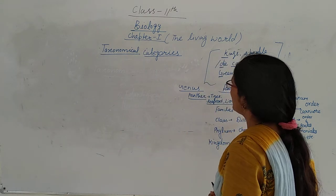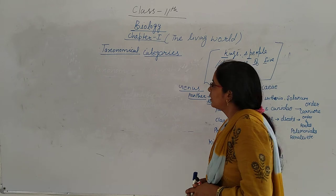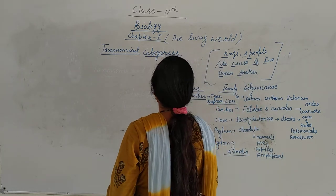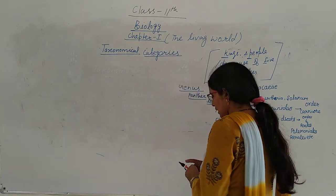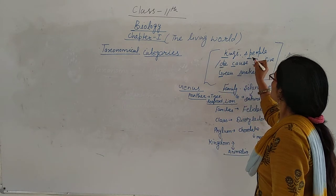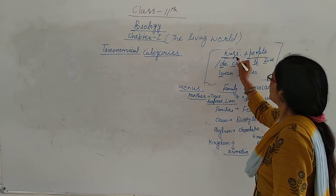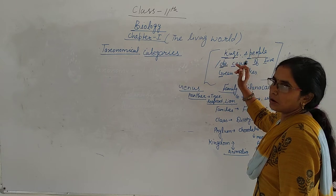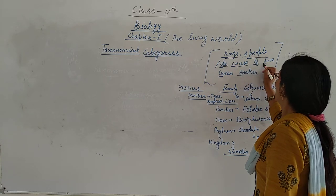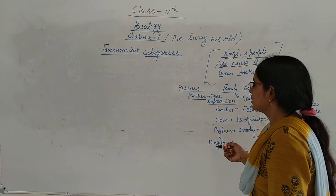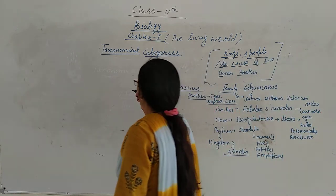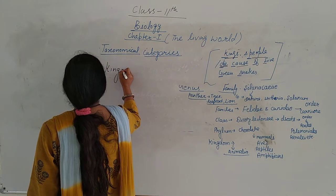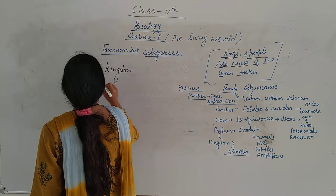Now let's talk about taxonomical categories. I hope you will have revised. To remember them, use this mnemonic sentence: King's people die because of five green snakes. We can write the categories in ascending or descending order.